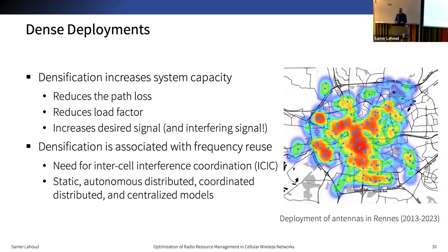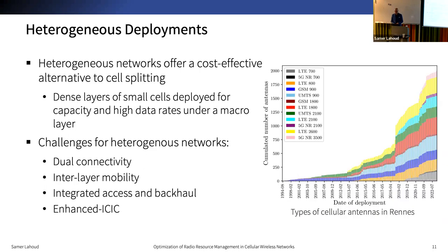Densification is often associated with frequency reuse, and this gives rise to inter-cell interferences, so coordination between cells becomes crucial, whether done statically, dynamically, or in a coordinated fashion. Deployment of additional macro base stations involves significant cost and elaborate site planning. Heterogeneous networks offer a cost-effective alternative, consisting of dense layers of small cells deployed for capacity under a global macro layer for coverage. New challenges stem from such heterogeneity: how to handle interference between cells and manage dual connectivity or mobility between layers.